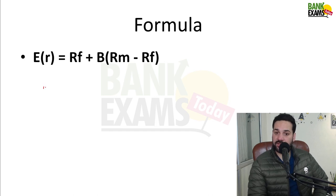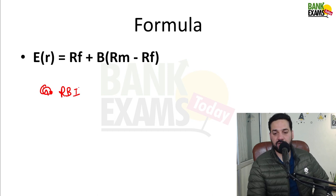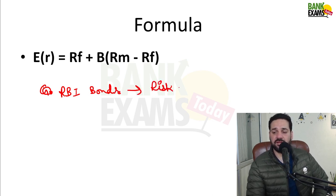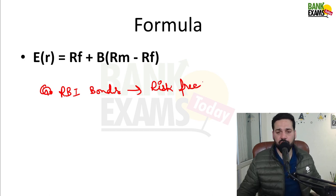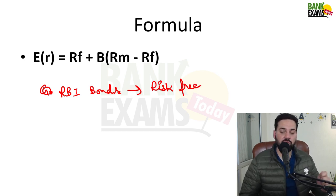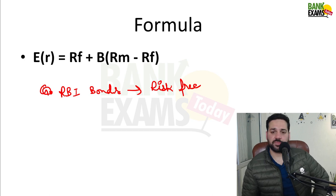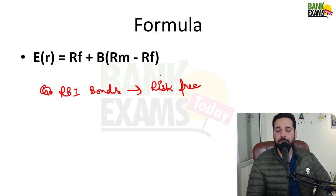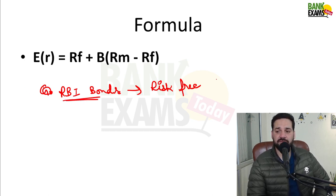Sovereign bonds — government bonds issued by RBI on behalf of the Government of India — are called sovereign bonds. That is totally risk-free, because if the government defaults, the entire stock market would collapse. So RBI-issued bonds are considered risk-free. Let's assume RBI bonds give a 6% return.